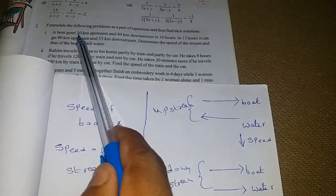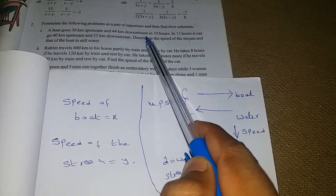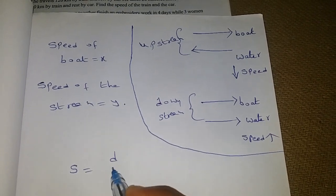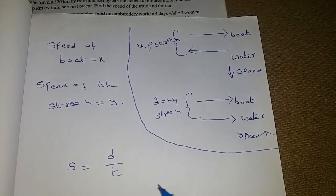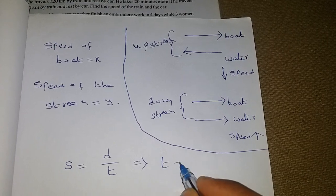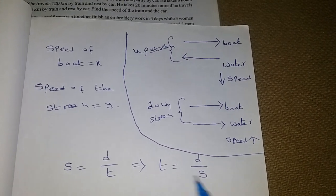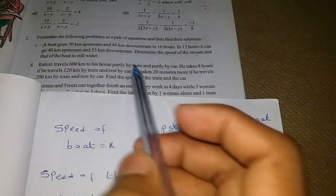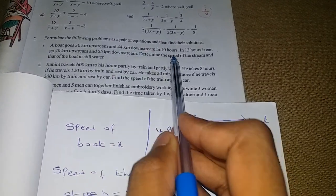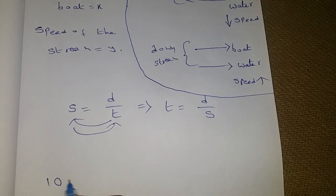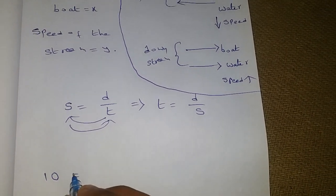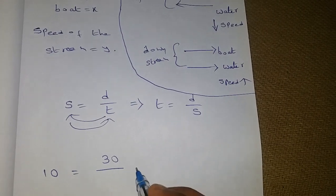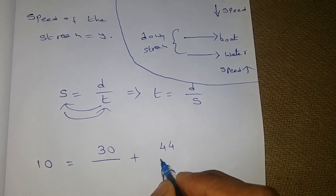The problem states that to cover 30 kilometers upstream and 44 kilometers downstream, it will take 10 hours. We have the relation: speed equals distance by time, so time equals distance by speed. While going 30 kilometers upstream and 44 kilometers downstream it will take 10 hours, so: time 10 hours equals 30 kilometers by upstream speed plus 44 kilometers downstream by downstream speed.